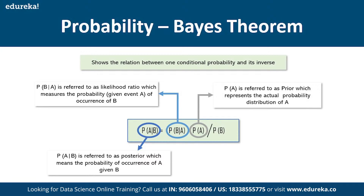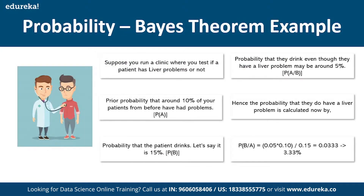Bayes' theorem is a formula that shows the relationship between a conditional probability and its inverse. The formula is: P(A|B) = P(B|A) × P(A) / P(B). It is used to determine the probability of an event based on prior knowledge of related conditions.